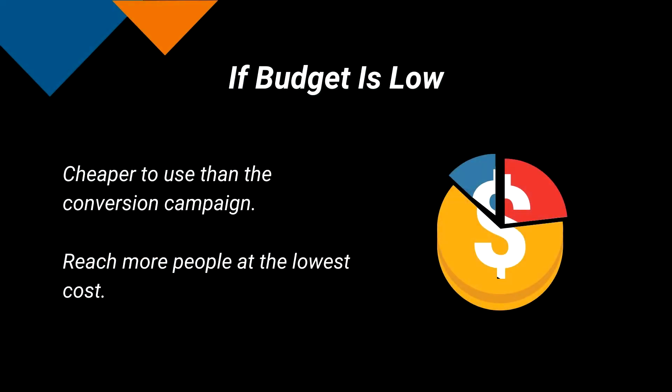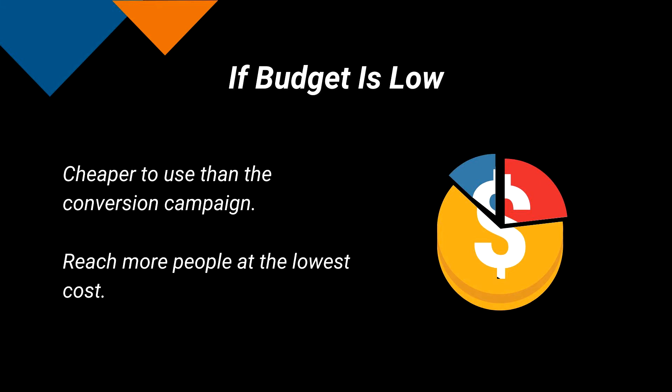Another reason to use engagement is if your budget is low. The good thing about this objective is that you can run a video view campaign or a blog post campaign for less than a few dollars — it's cheaper than most objectives and it allows for more reach. And when you retarget your prospects from engagement, it could be a lot cheaper to also run the conversion campaign. For example, you run a $10 engagement campaign, then you could run less than $5 on your conversion campaign to retarget those who made the interaction and get a good result.